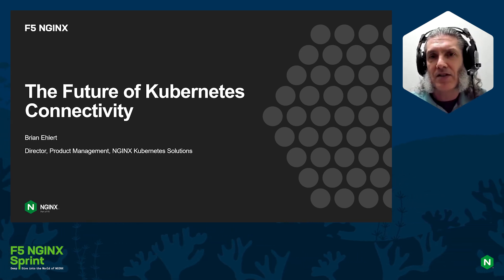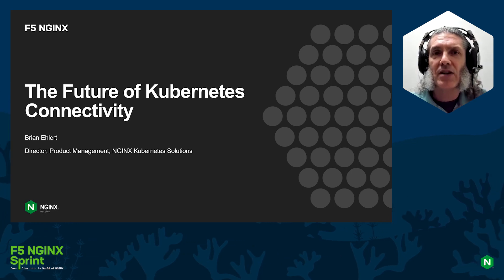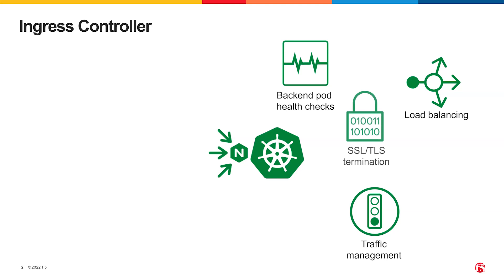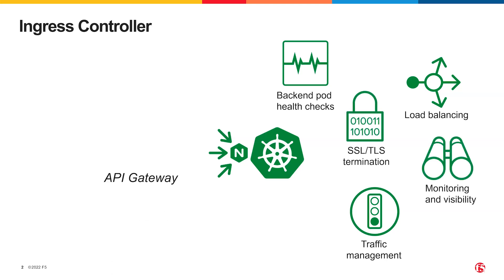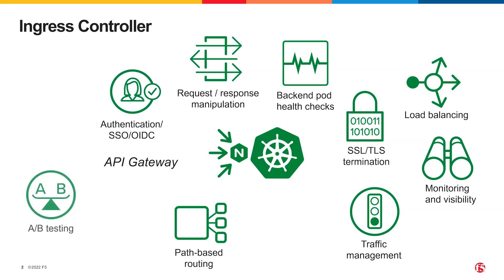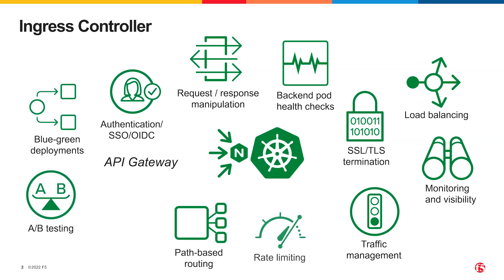Around the ingress object sprung up implementations of ingress controllers. Ingress controllers are reverse proxies that are configured through the Kubernetes API. Operations and application teams look to ingress to support a wide array of use cases from TLS offload, header, response, and body manipulation, load balancing, and API gateway use cases such as path-based routing, method blocking, custom error codes, and even layer four protocols such as TCP and UDP.